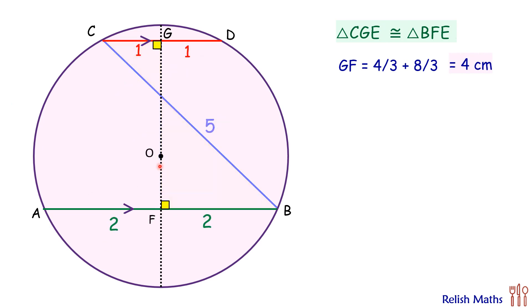To find the radius, let's join OB, which is a radius of the circle, and OD, which is also a radius of the circle. Now here let's assume OF is y centimeters. The full length GF is 4 centimeters, and thus GO will be 4 minus y centimeters.